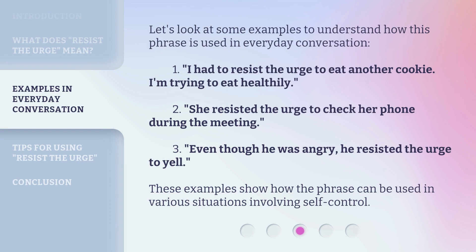Let's look at some examples to understand how this phrase is used in everyday conversation. One: I had to resist the urge to eat another cookie — I'm trying to eat healthily. Two: she resisted the urge to check her phone during the meeting. Three: even though he was angry, he resisted the urge to yell. These examples show how the phrase can be used in various situations involving self-control.